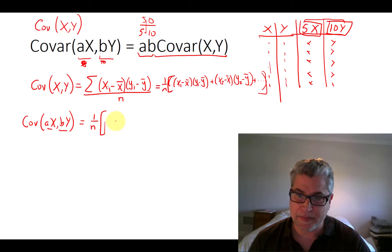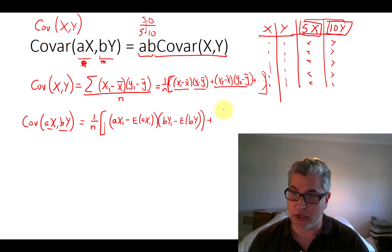We would have AX1 minus the average of AX1. Let's use our expectation operator there. So that was this part. Let's do this for the corresponding Y. That is BY1 minus the expectation of BY. And then we do that for our second term.